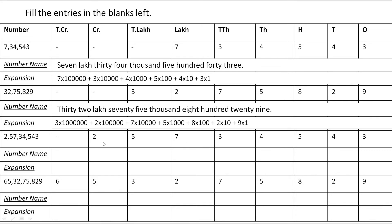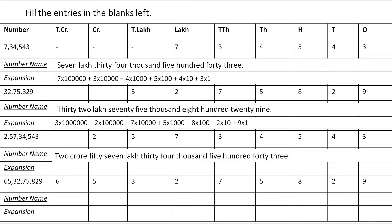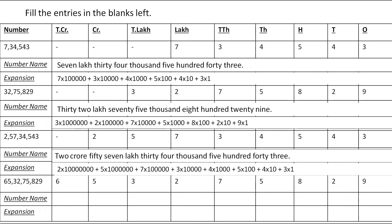In the next example, 2 is in the Crore group, 57 is in the Lakh group, 34 is in the Thousands group, and 543 is in the Ones group. So the number name is 2 crore, 57,34,543. The expansion is: 2 × 1 crore + 5 × 10 lakh + 7 × 1 lakh + 3 × 10,000 + 4 × 1,000 + 5 × 100 + 4 × 10 + 3 × 1.